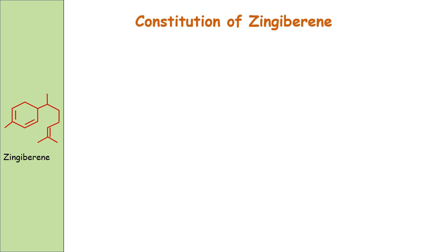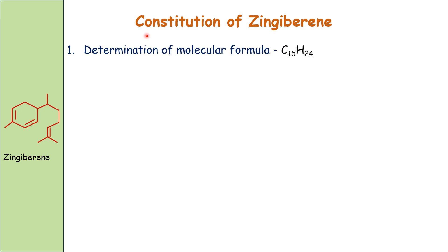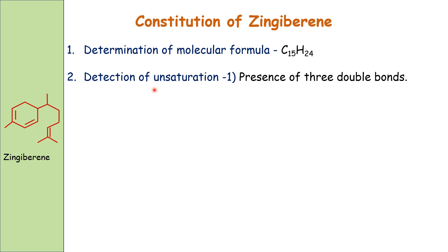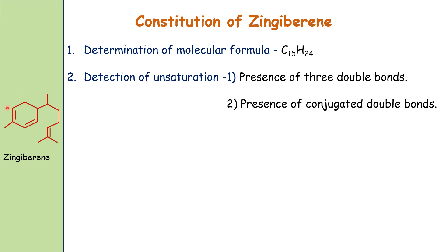Now we will study the constitution of gingivirine. The structure elucidation involves: first, determination of molecular formula; second, detection of unsaturation — gingivirine contains three double bonds, of which two are in conjugation.